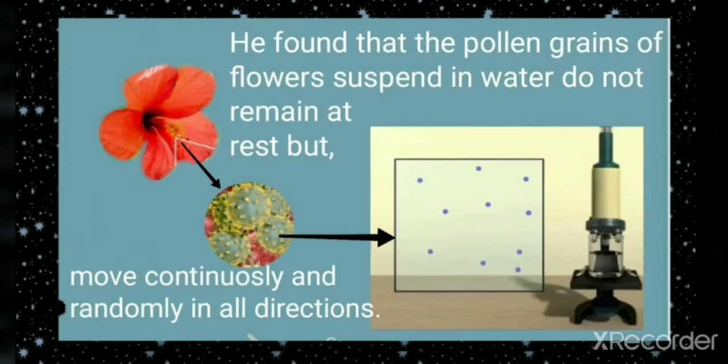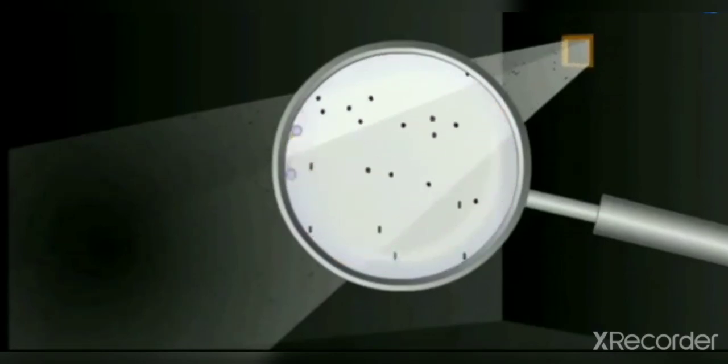What is the cause of it? Why does it happen? Let us discuss through an example. Brownian movement is also observed when a beam of sunlight enters a dark room through a slit. You may have noticed the zigzag motion of dust particles.